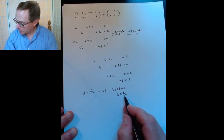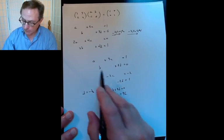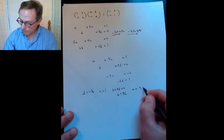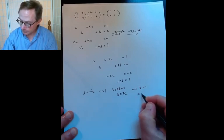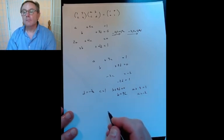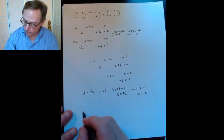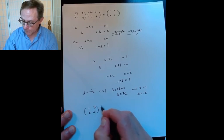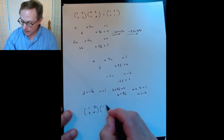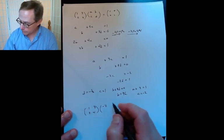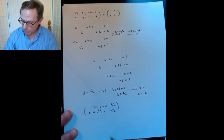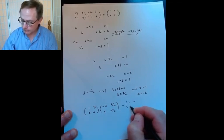So I get from the bottom line that D is minus 1 half. C is 1. And then I'm looking here at B plus 3D equals 0, so I get that B is 3 halves. And then the last one is A plus 3 times 1 gives 1, so A is minus 2.